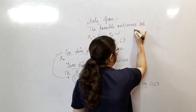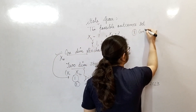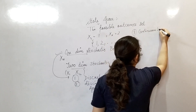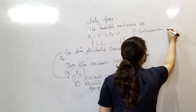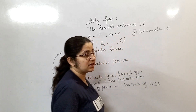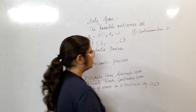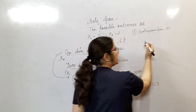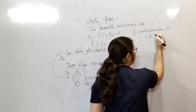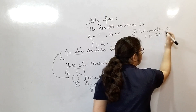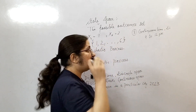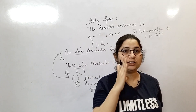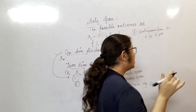The third type is continuous time and discrete space. Taking the same number-of-admissions example — here I give a continuous time interval, say 9 to 12 p.m. This is the continuous time. And the discrete space means the number of admissions will be either 1, 2, 3, and so on.